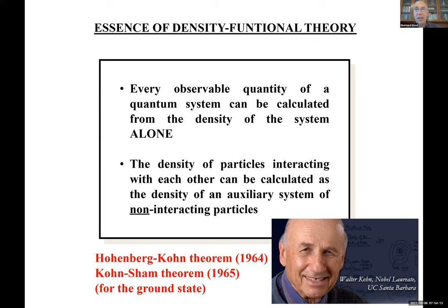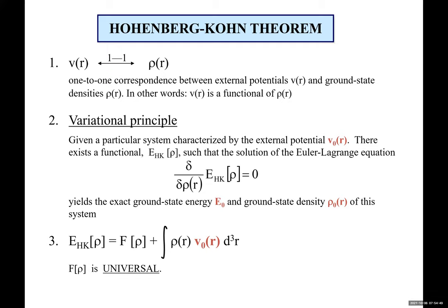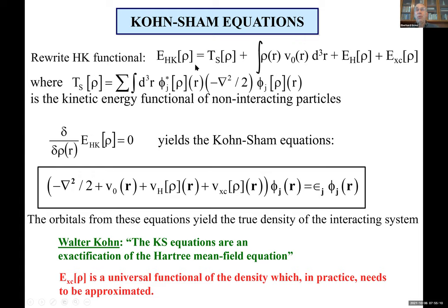In more mathematical form, Hohenberg-Kohn means there is a rigorous one-to-one correspondence between the potential and the ground-state density. There is a variational principle: there exists a functional of the total energy such that the variational principle gives you the exact ground-state energy and density. A third statement, heavily discussed in the previous talk, is universality: this functional F is universal — there is one and only one functional for all Coulomb systems. The Kohn-Sham equations are the corollary to the Hohenberg-Kohn variational principle: if one writes the total energy functional where T_s is the kinetic energy of non-interacting particles, the variational principle gives the Kohn-Sham equation.